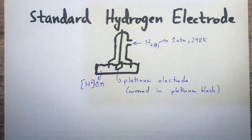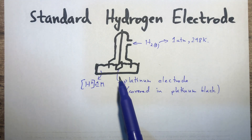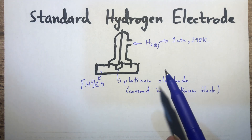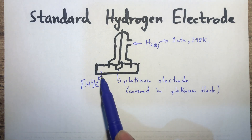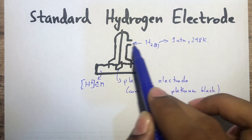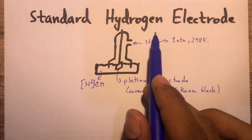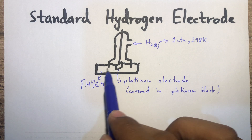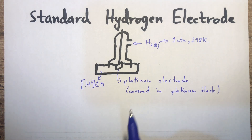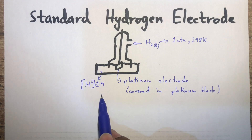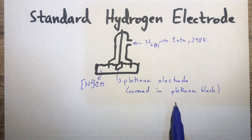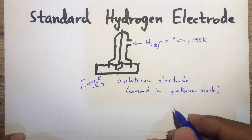A standard hydrogen electrode uses a platinum electrode because hydrogen is a gas. There is a glass tube through which hydrogen is passed. Because it's standard, standard conditions apply: 1 atm pressure and 298 K temperature. The electrolyte is hydrogen ions at 1 mole per dm³. Platinum is used because it is an inert electrode that does not react with the electrolyte, and it is covered with platinum black, which acts as a catalyst.